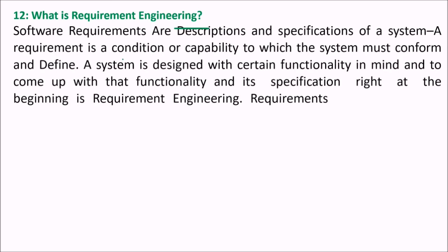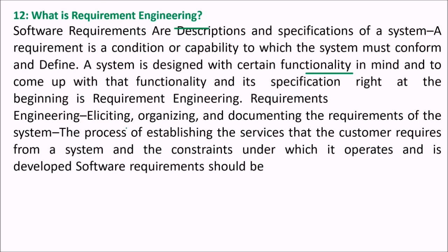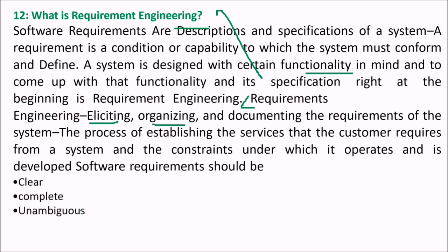What is requirement engineering? Software requirements are descriptions and specifications of a system. A requirement is a condition or capability to which the system must conform. A system is designed with certain functionality in mind, and defining that functionality in its specification at the beginning is requirement engineering — the process of eliciting, organizing, and documenting the requirements of the system, establishing the services the consumer requires and the constraints under which it operates. Software systems should be clear, complete, unambiguous, and quantitative. These are the guiding principles for making a good product.